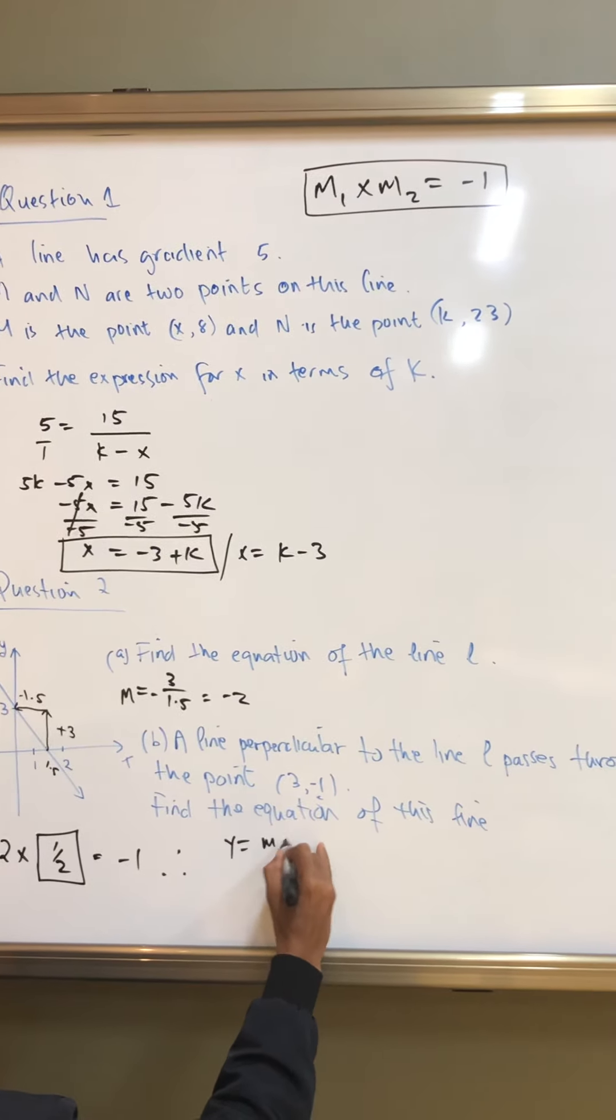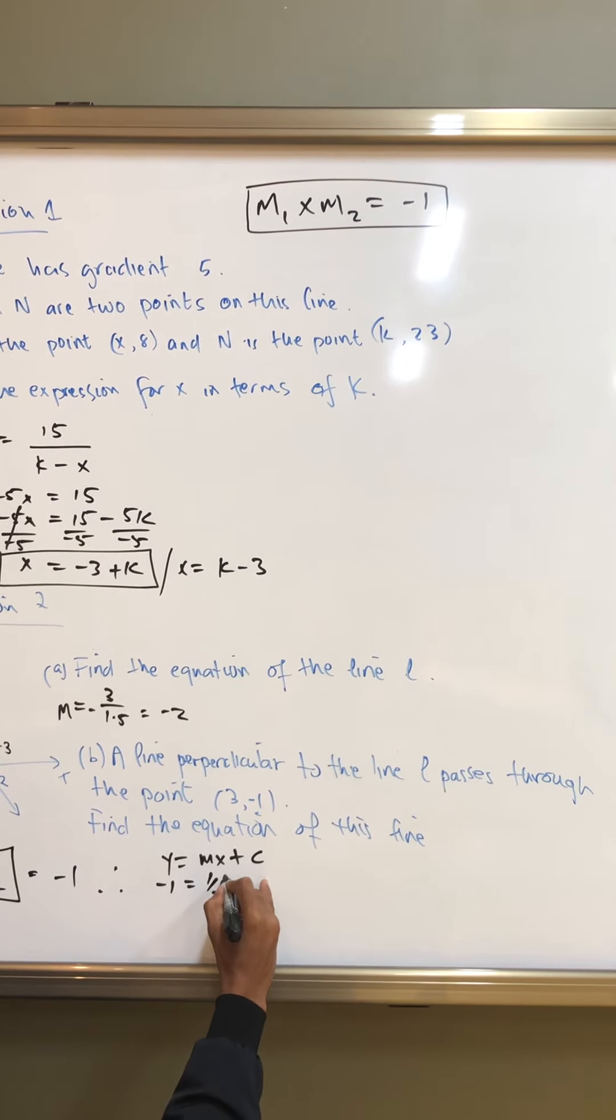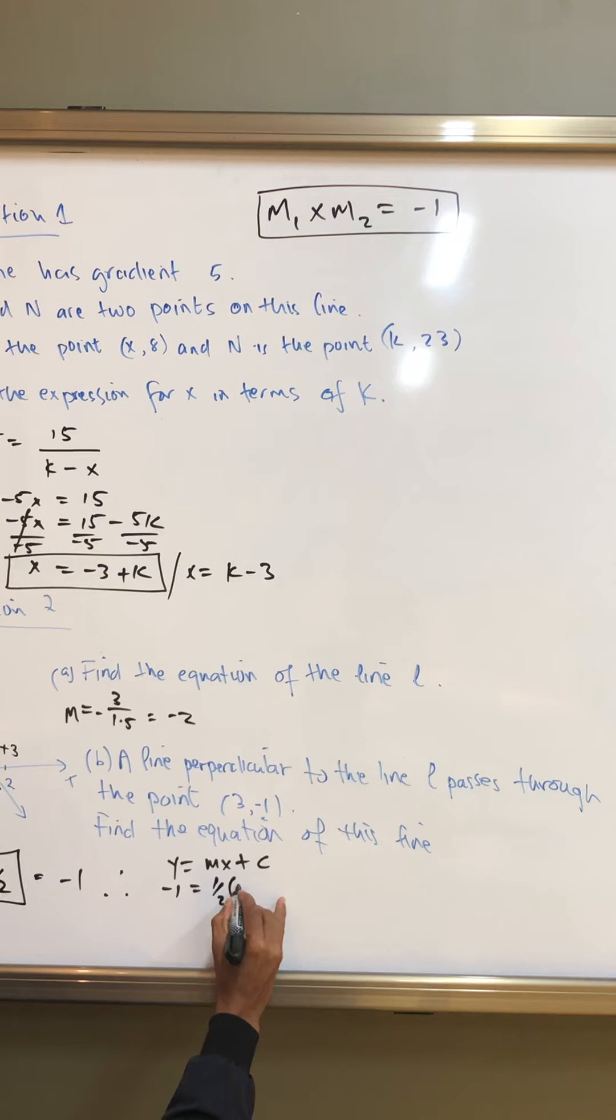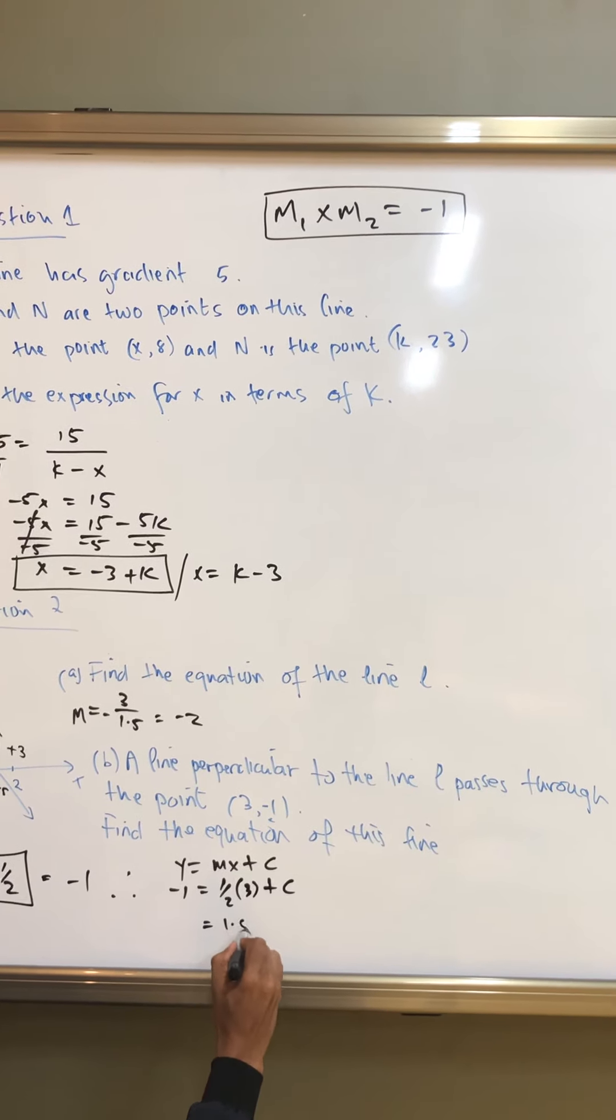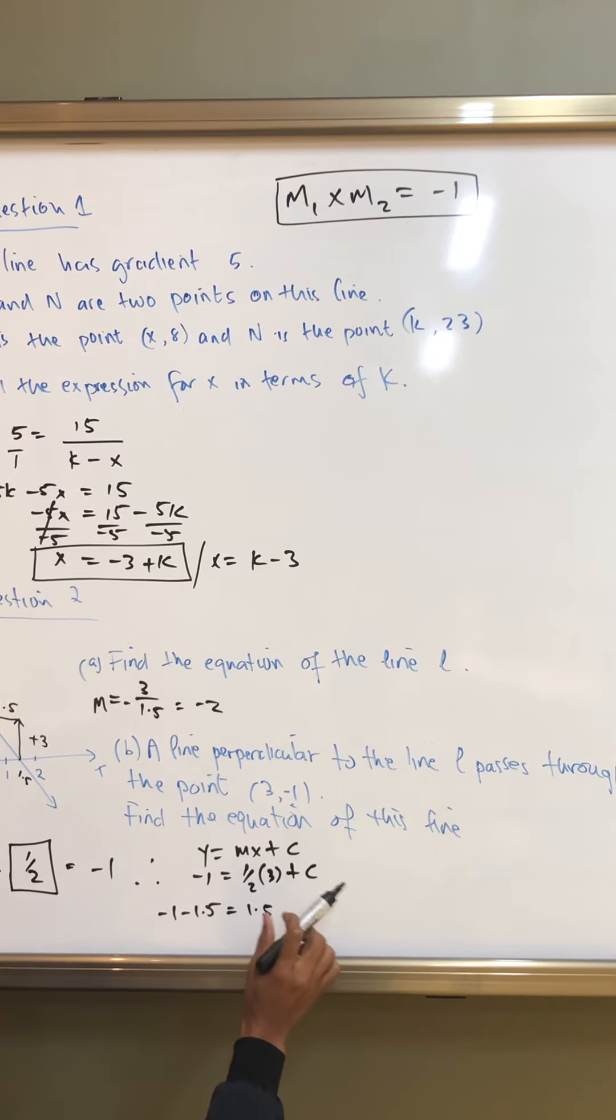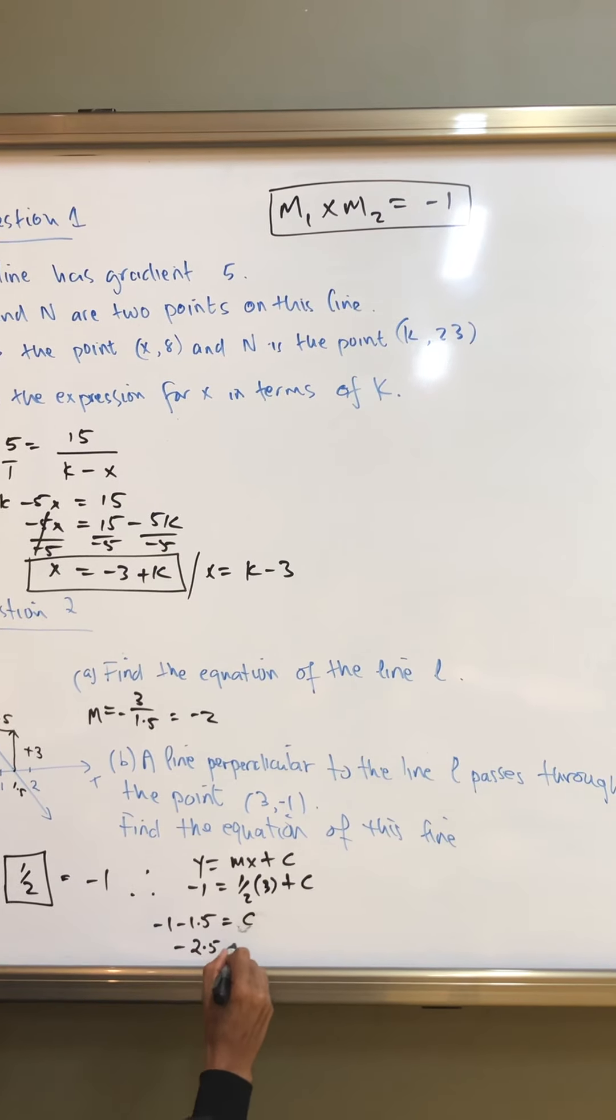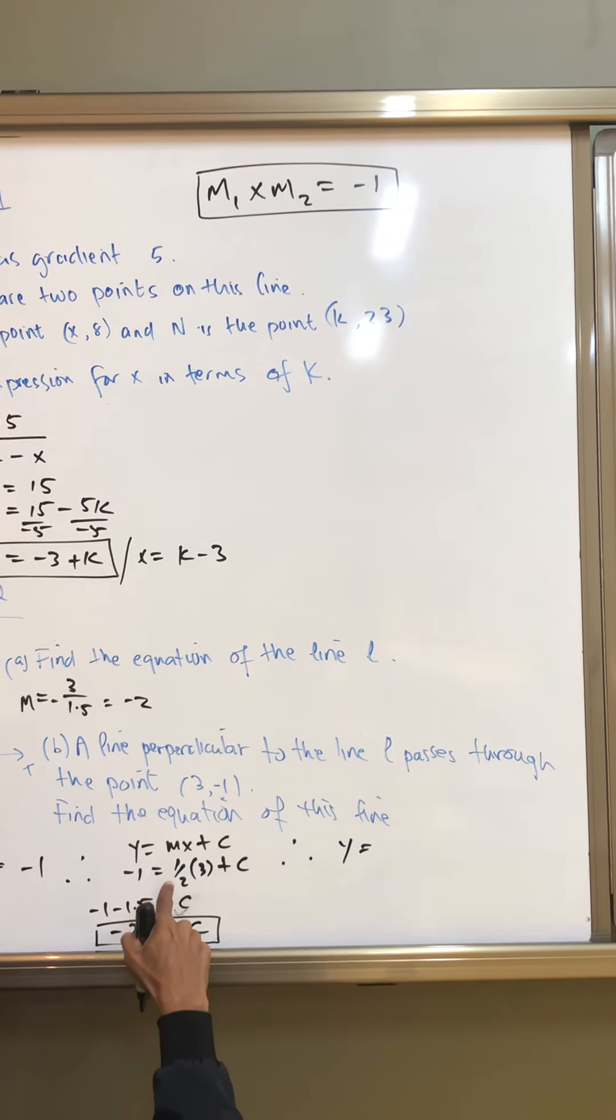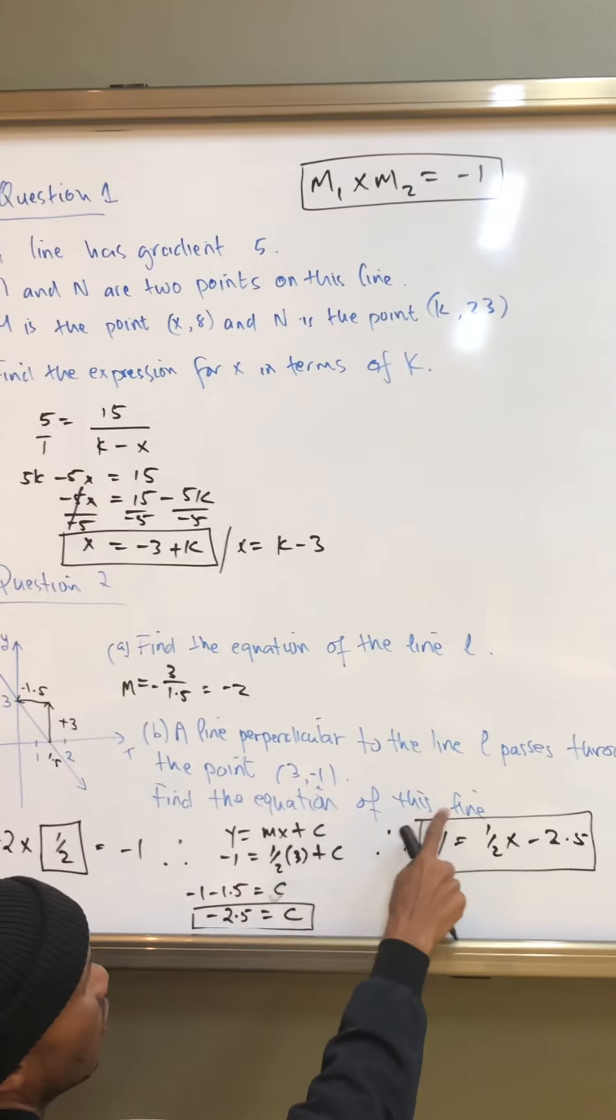So we have y is equal to mx plus c. What is the value of y? Negative 1. The value of m, 1 over 2. And x, I have to find c. That's why I'm doing this. I'm finding the value of c. And then x is 3 plus c. And that will be 3 over 2, which is 1.5. And then that will be negative 1 minus 1.5, 1.5 is equal to c. Sorry. Is equal to c. So that would be minus 2.5 is c. Whereas 2.5 is c. So therefore, the equation is y is equal to x minus 2.5 or 5 over 2. So that's the equation of that line.